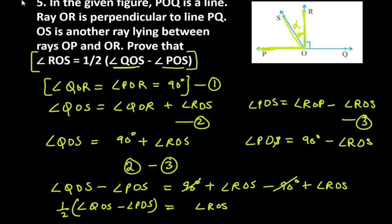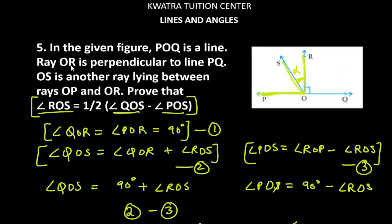Yes, this is how you can prove it. First, see what needs to be proved, then build your equations accordingly. We saw that QOS and POS were needed, so we formed equations in those terms. I tried to involve ROS in both equations because that was required — ROS was needed in the answer. So try questions like these this way; they are not very difficult. You just need to see how to arrive at the answer. This is all for question number 5. Let's now start with question number 6.